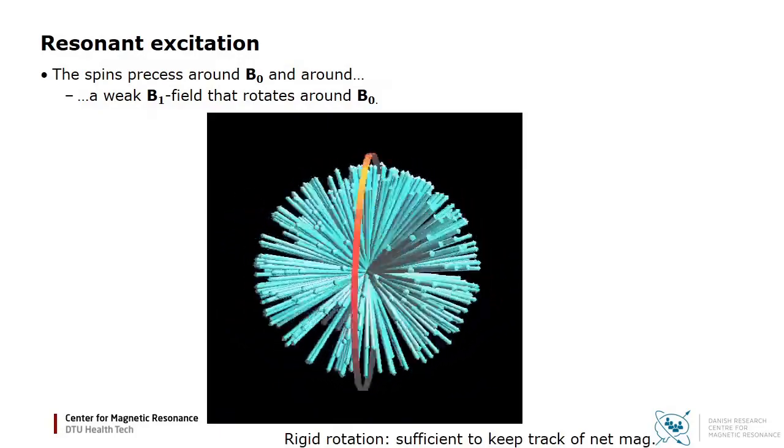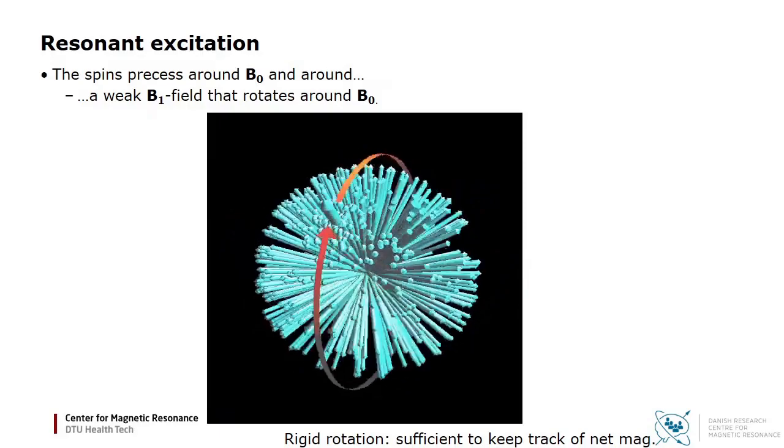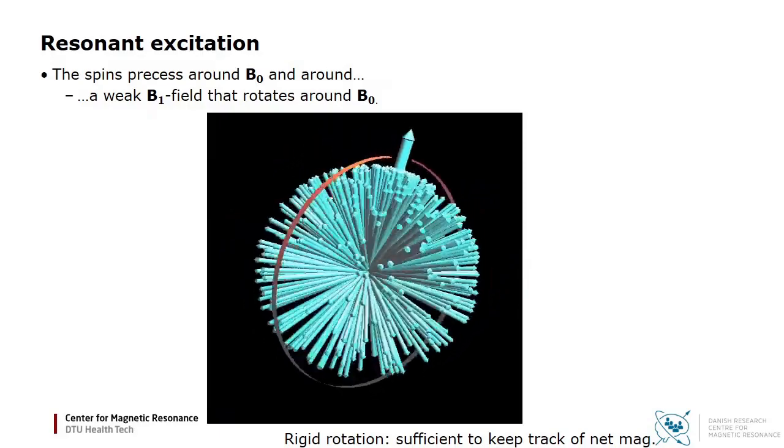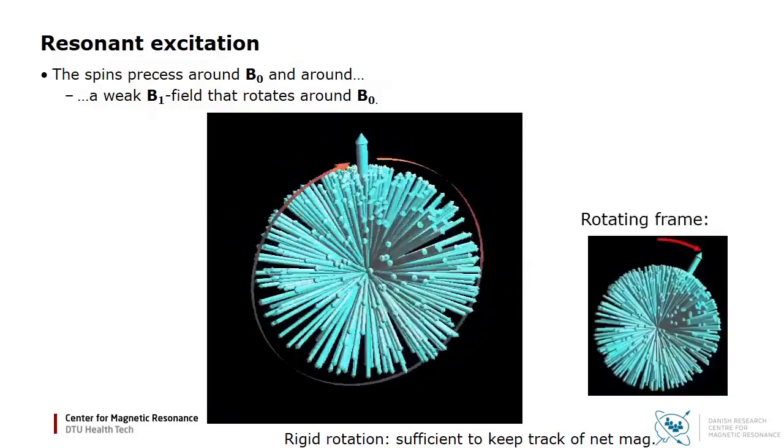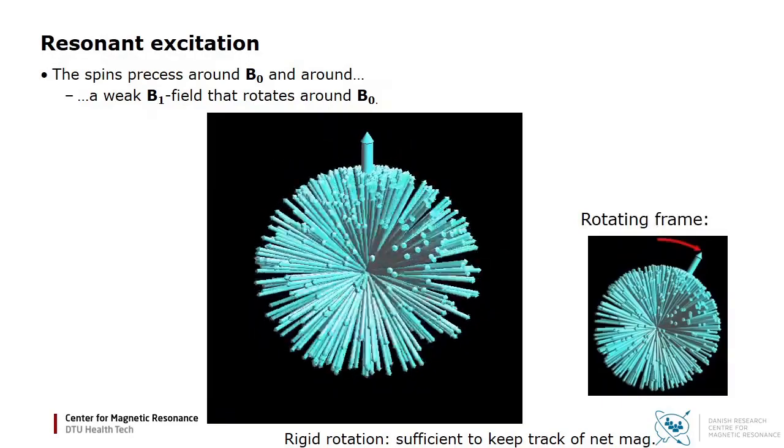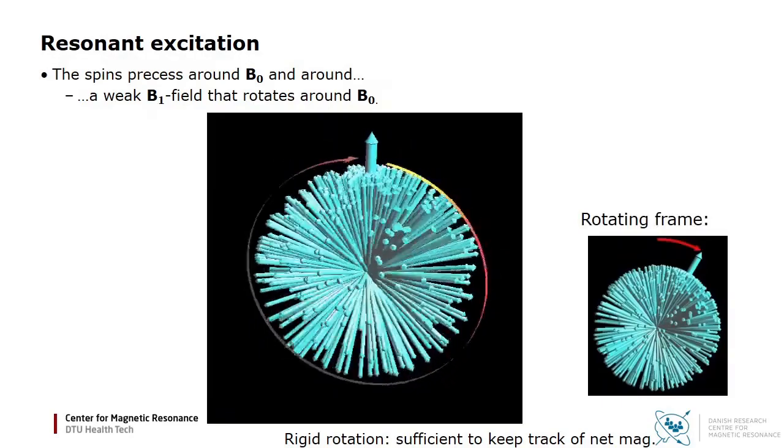Since the precession around B0 is fast and common to all nuclei, it makes sense to change to a frame of reference rotating at the RF frequency. In this frame, only the precession around B1 remains.